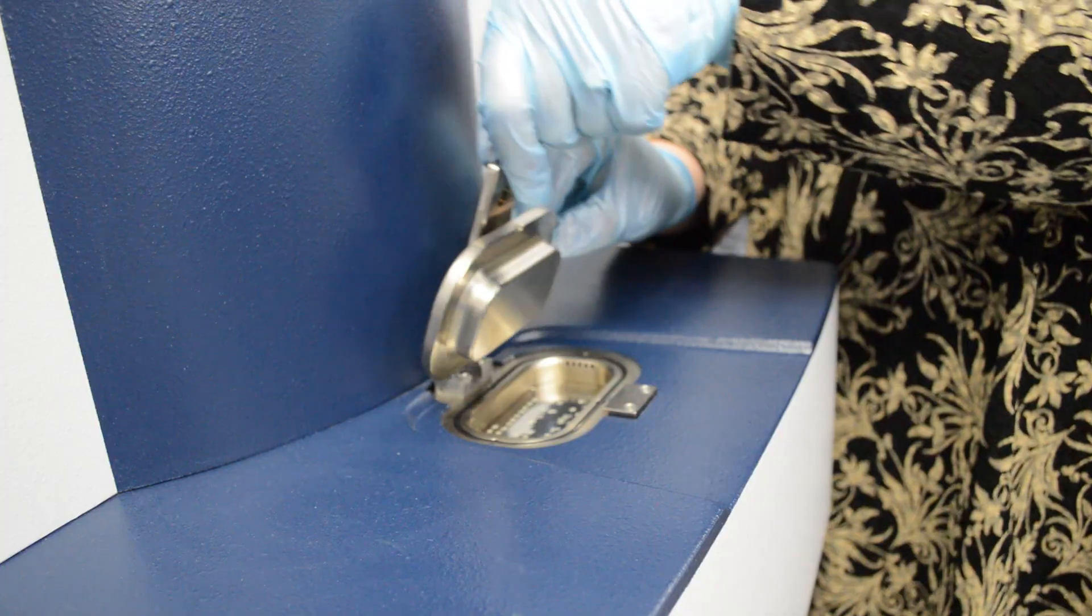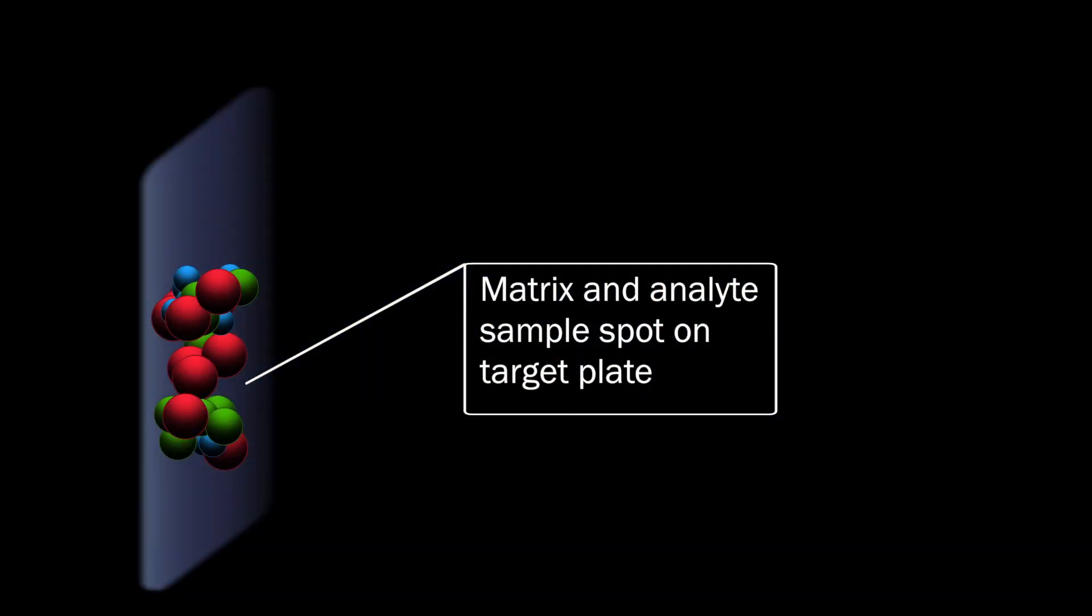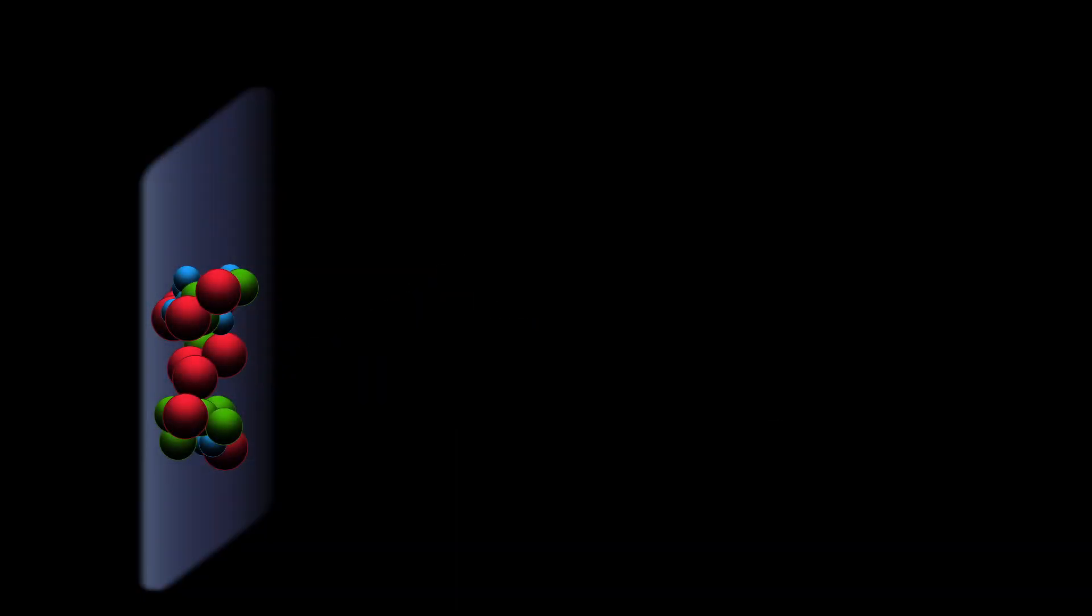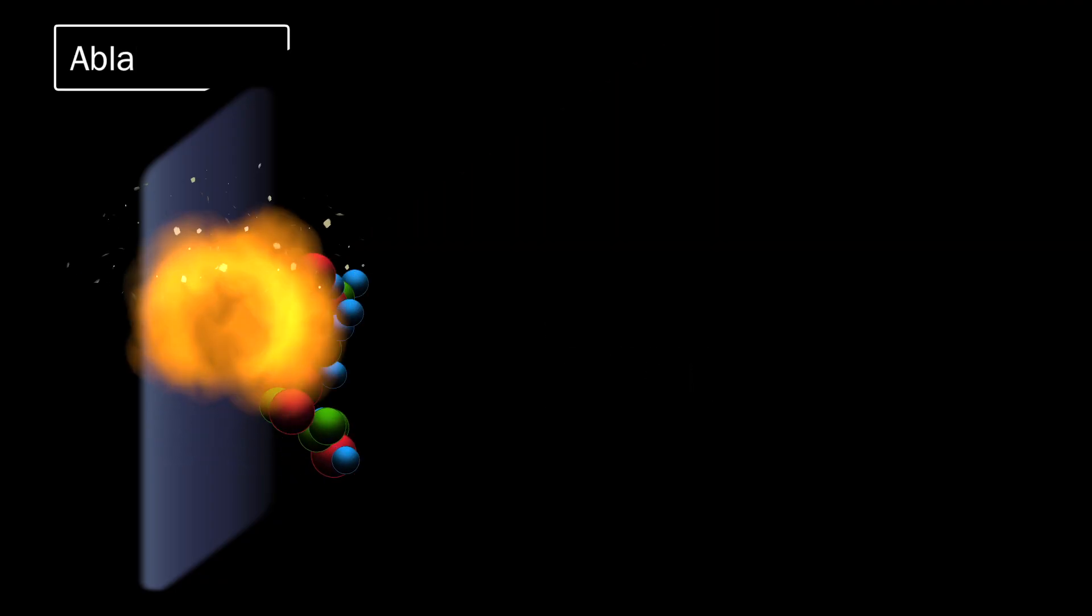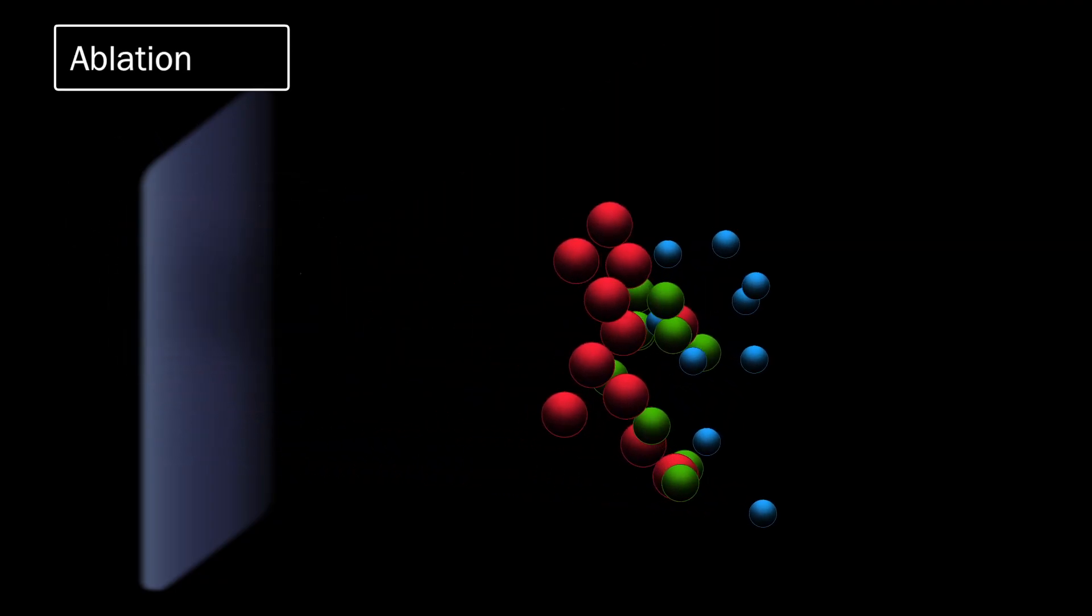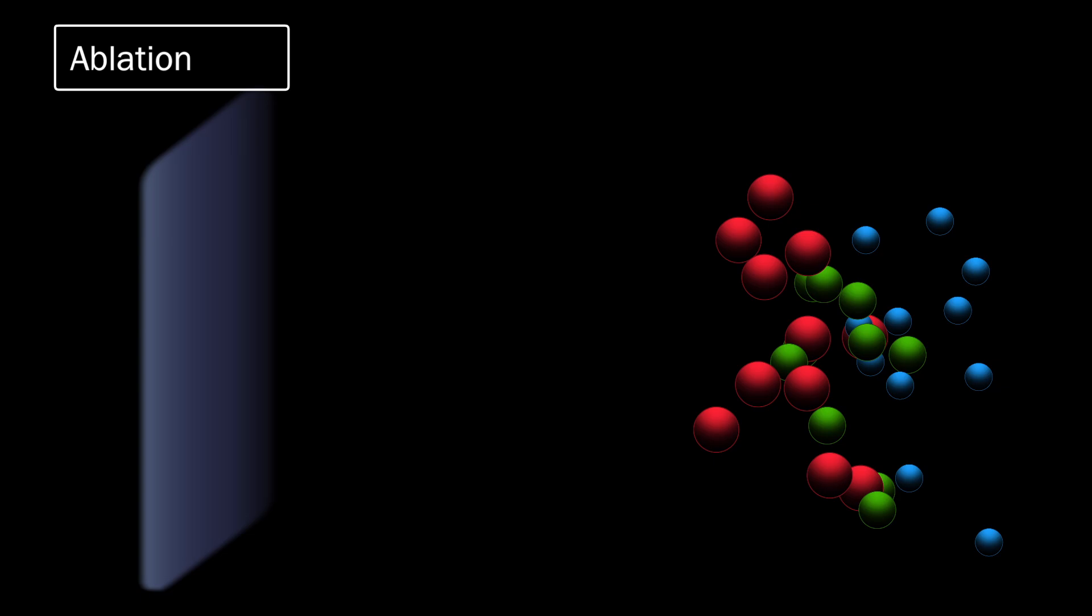Once inside the spectrometer, the target is brought into a vacuum and struck by a pulsed UV laser, usually at a wavelength of 337 nanometers. The laser energy is absorbed by the matrix molecules, which are energetically ablated from the surface of the sample, carrying the analyte molecules into the gas phase as well.